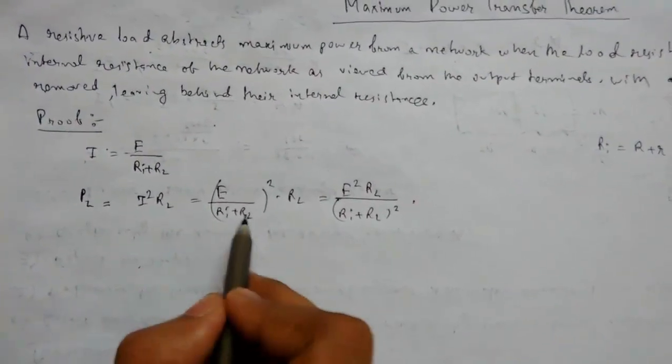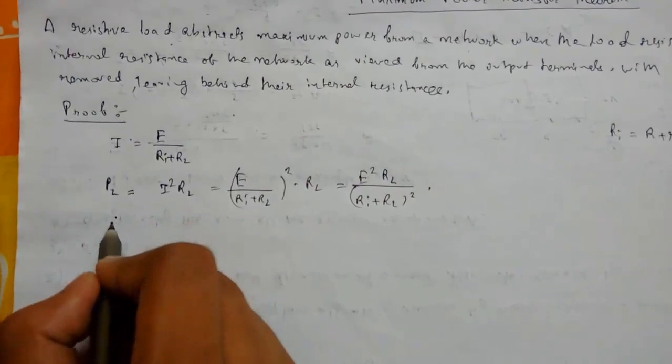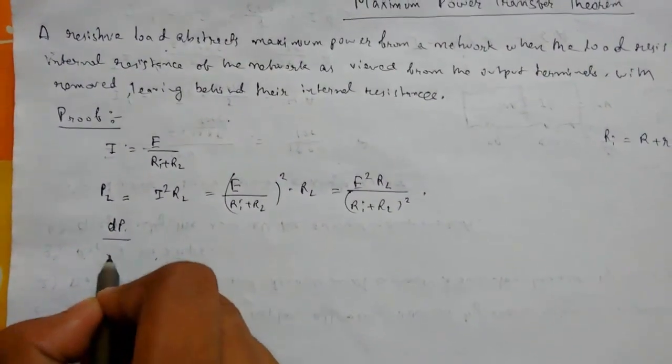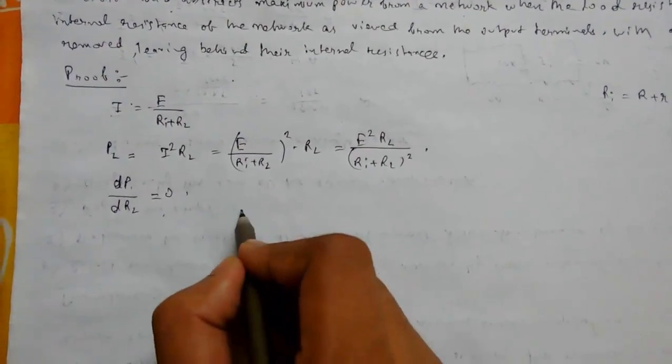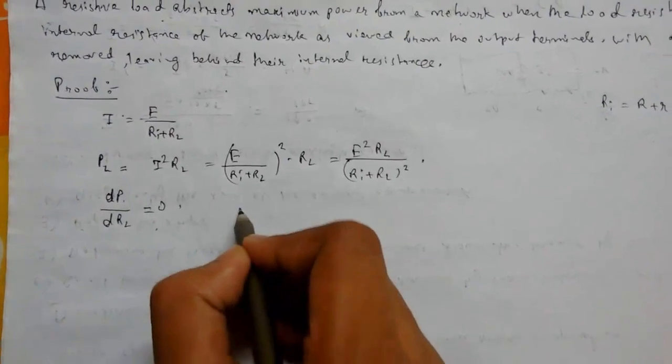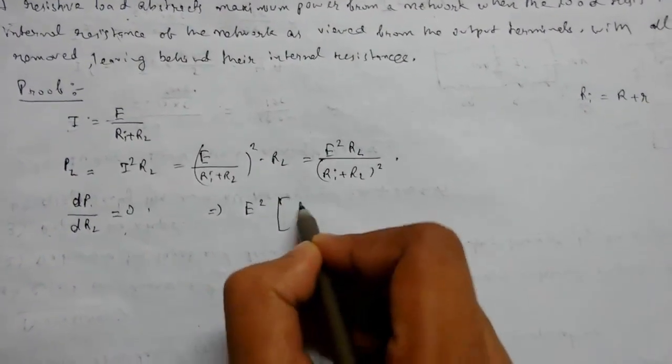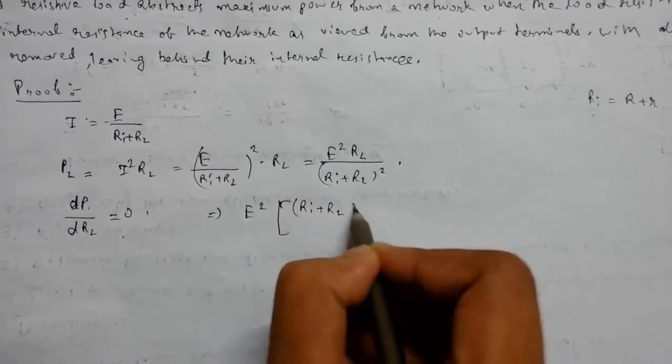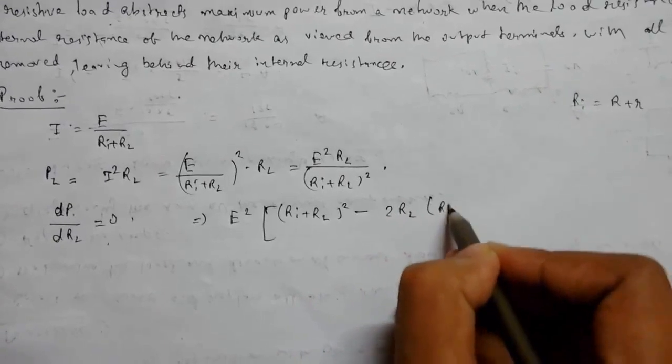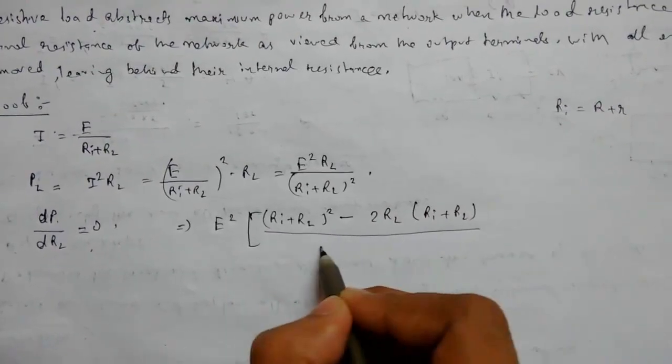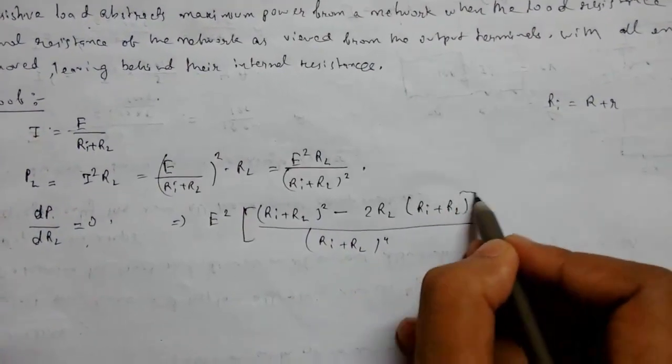For maximum power when RI equals RL, dP/dRL must equal zero. Now differentiating, we get E²[(RI+RL)² minus